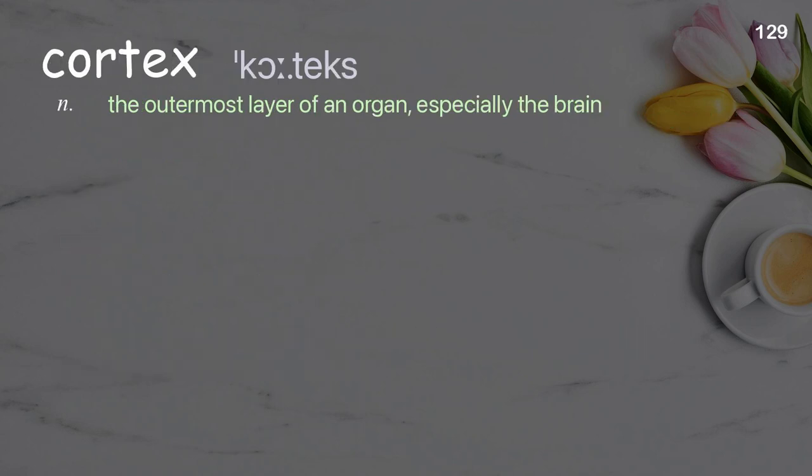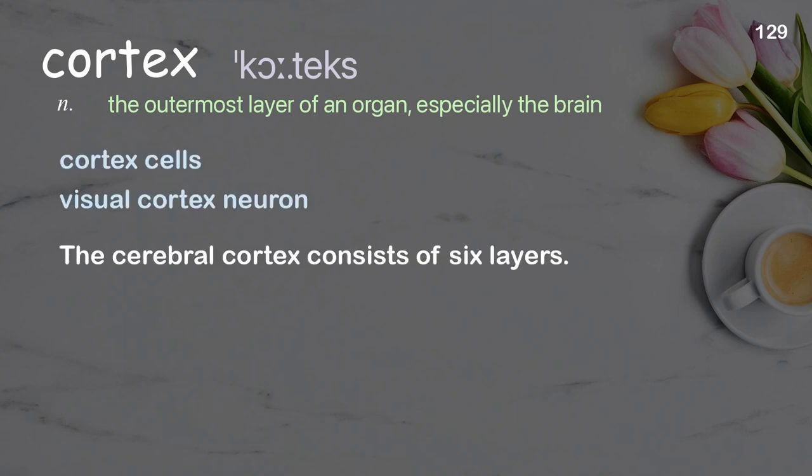Cortex. The outermost layer of an organ, especially the brain. Examples: cortex cells, visual cortex neuron. The cerebral cortex consists of six layers.